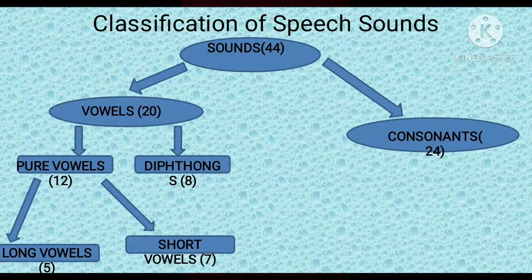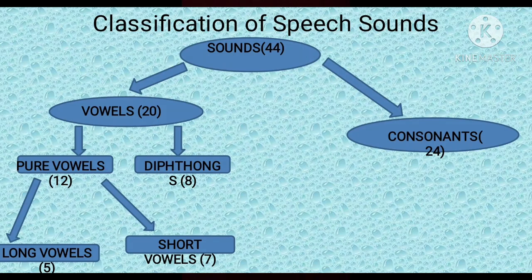I hope you remember the lesson I have taken in our previous class about phonetics. Today, let's continue with the classification of speech sounds. As I mentioned in the last class, in order to represent 26 alphabets in English, we have 44 sounds. These 44 sounds are known as speech sounds or phonemes. These phonemes are broadly classified into two categories: vowels and consonants.